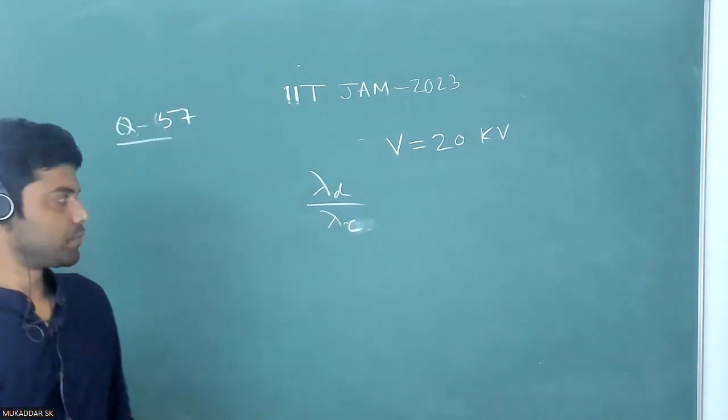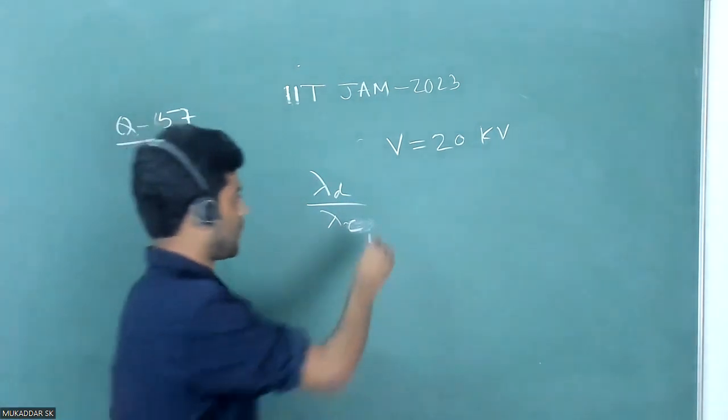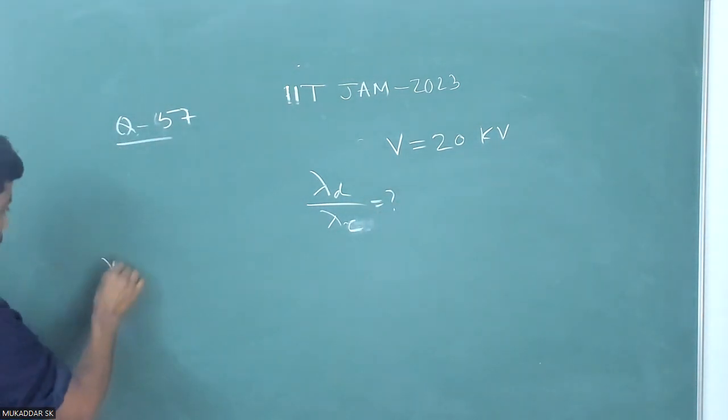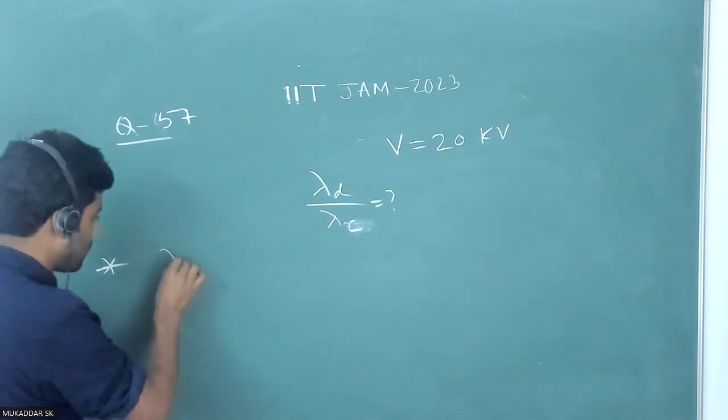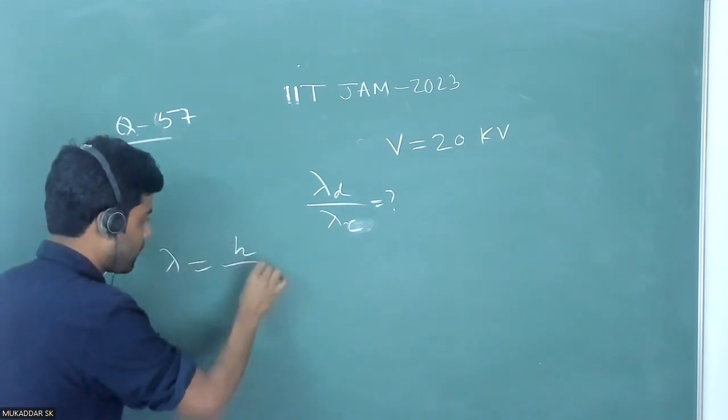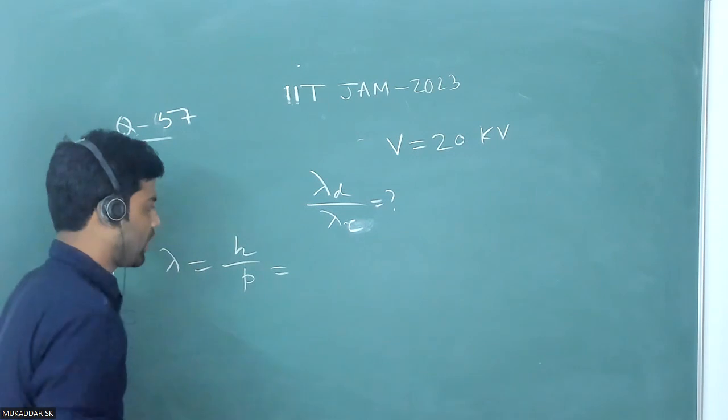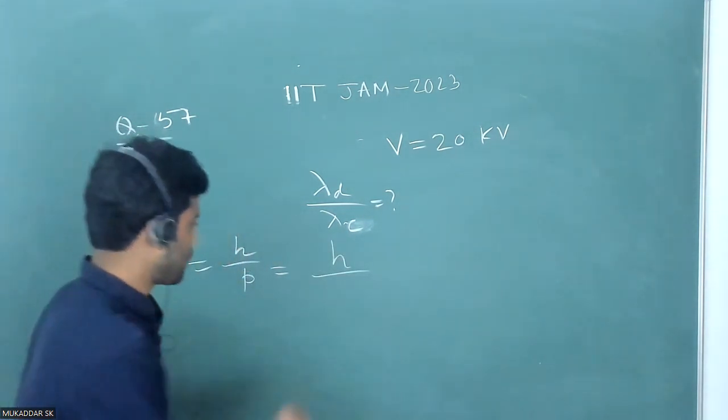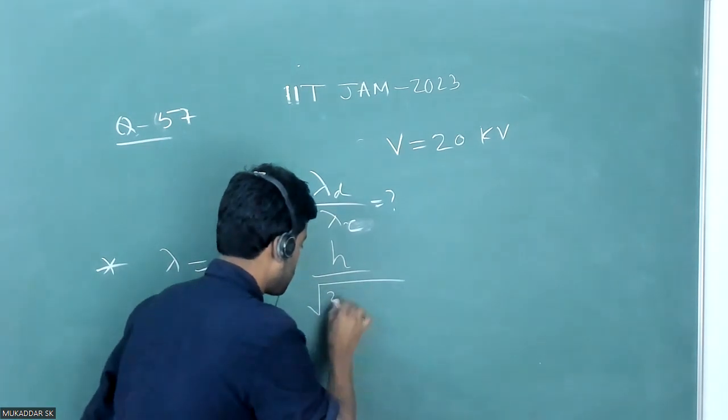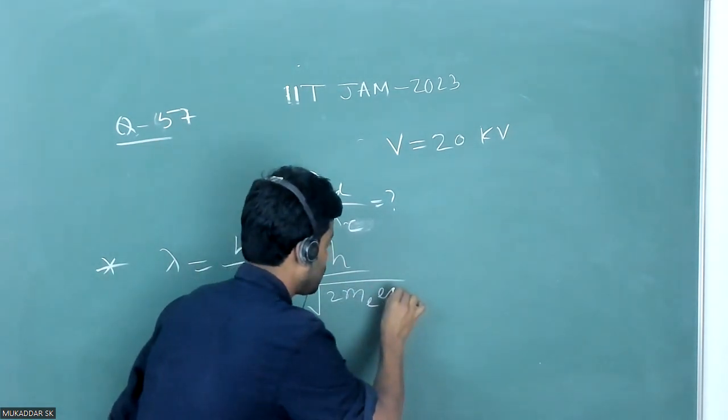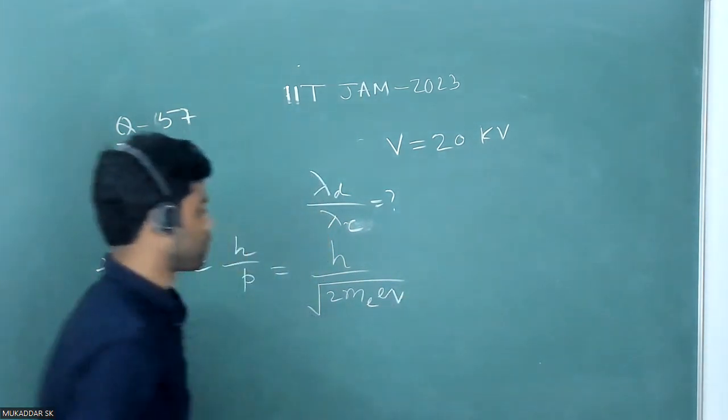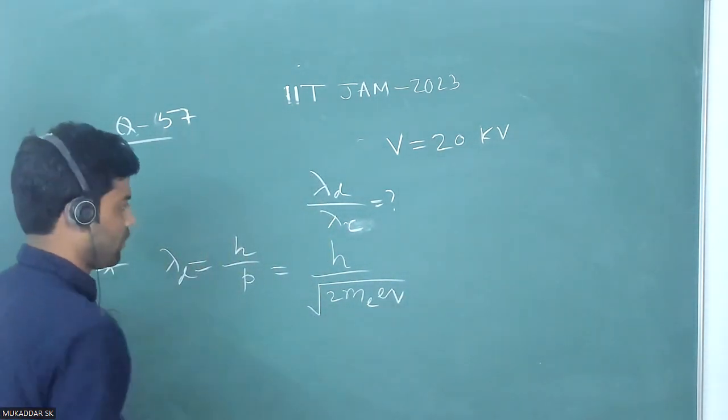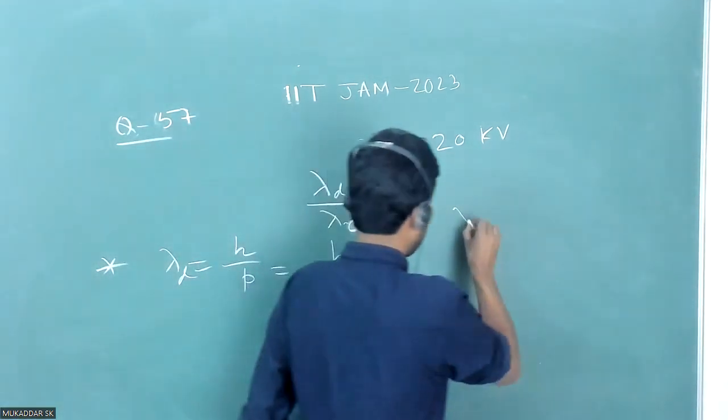As you know, the de Broglie wavelength of electron is h by p, and we can substitute the expression for p. That will be h divided by square root of 2meV, where m is the electron mass and V is the potential.